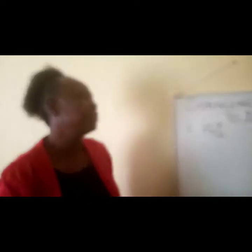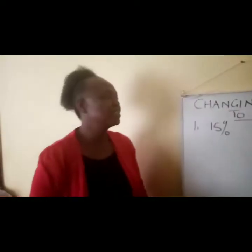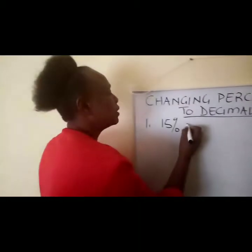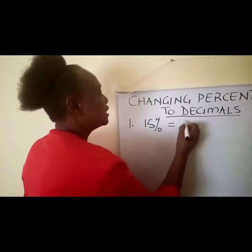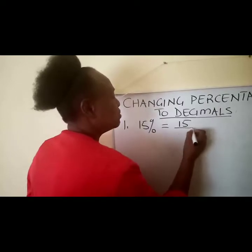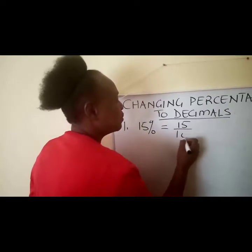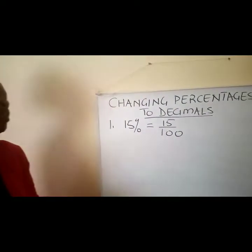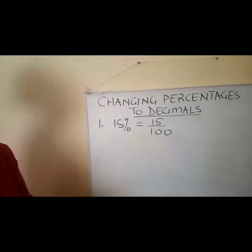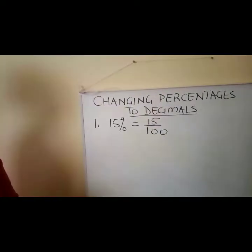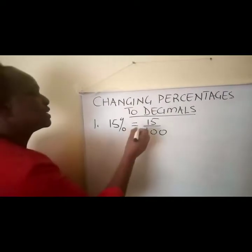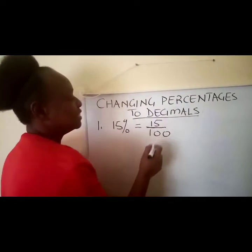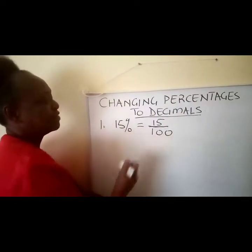When we're converting percentages to fractions, we agreed that 15 percent actually means 15 over 100. So instead of reducing it, we now want to make it a decimal. Because there's a division line, it means we are actually dividing by 100.